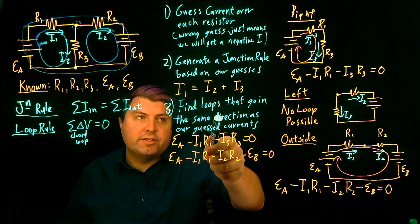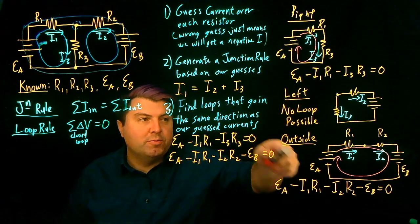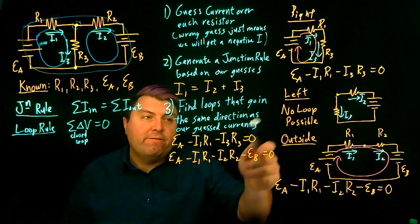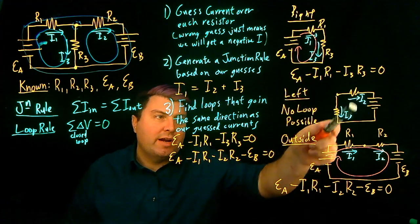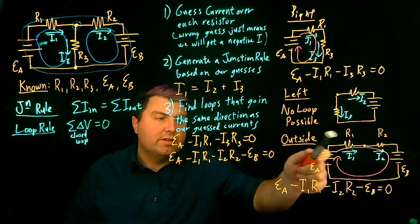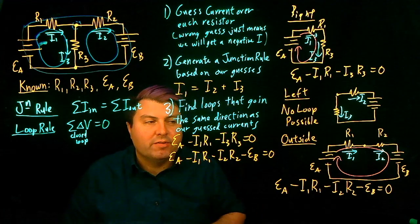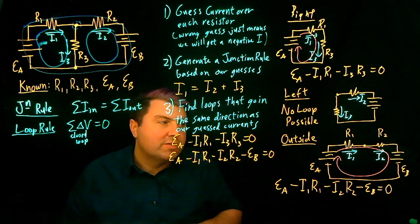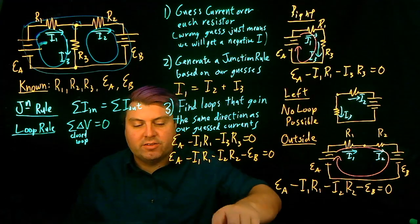So if we don't do this, then we might choose one of the wrong loops. We might not have a choice of which one to do or anything like that. If we don't guess the currents in a general direction, we might have some different directions and things like that. So we really want to be very sure that we follow these rules so we have a consistent approach to how to solve circuits.